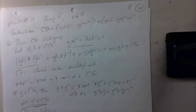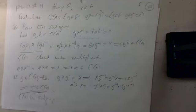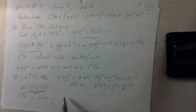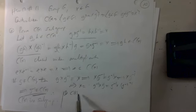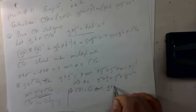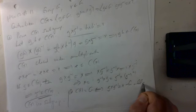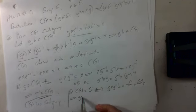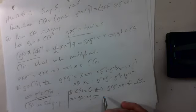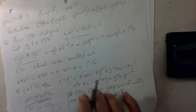The centralizer C(x) equals the whole group G if and only if gxg⁻¹ = x for all g, which is the same as saying gx = xg for all g — meaning every element commutes with x, i.e., x is in the center of G.